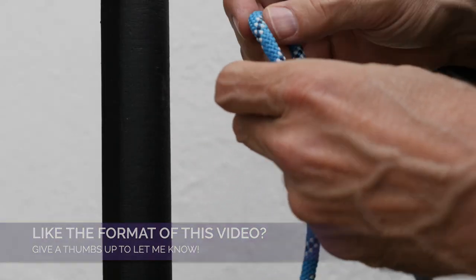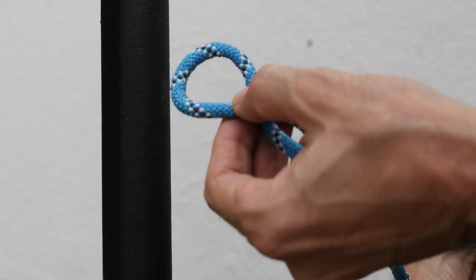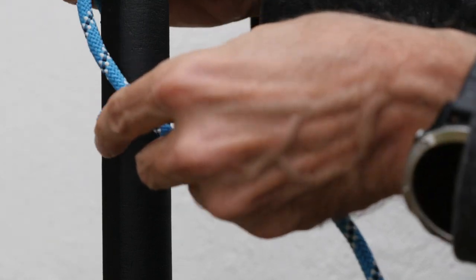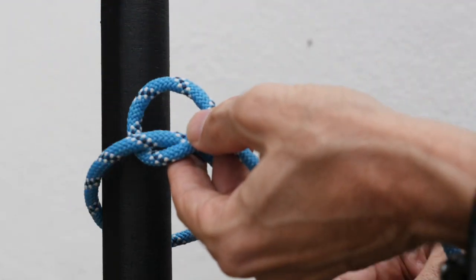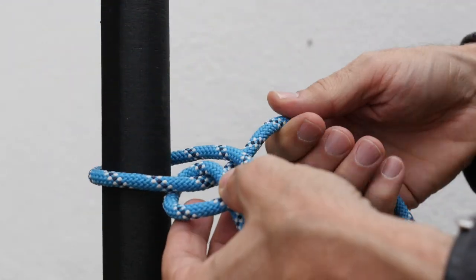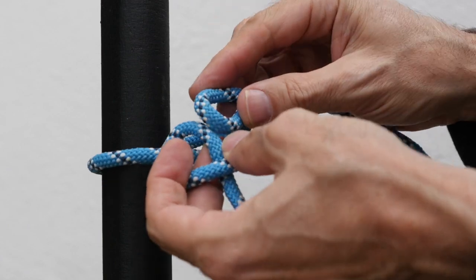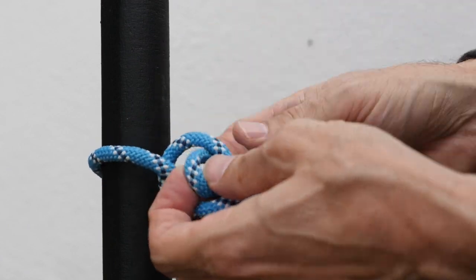The kalmyk loop can be tied around an object, but similar to a common bowline, it's not easily adjustable. You'll need to untie it and then re-tie it to get the fit that you want. However, once tied, it is a stable knot for a lot of applications.